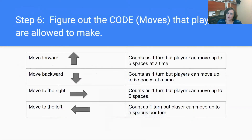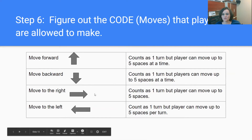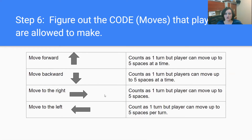Then you need to figure out what moves or codes are going to be allowed in your game. We decided to keep it simple: an up arrow means move forward, a down arrow means move backward, one arrow means move to the right, and the other arrow pointing the other direction means move to the left. We made the rule that one arrow counts as one turn, but the main player could move up to five spaces during that turn.